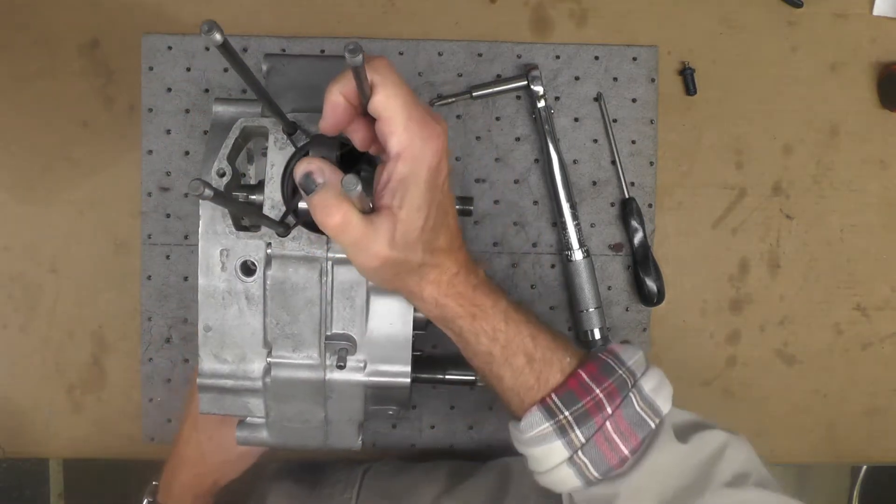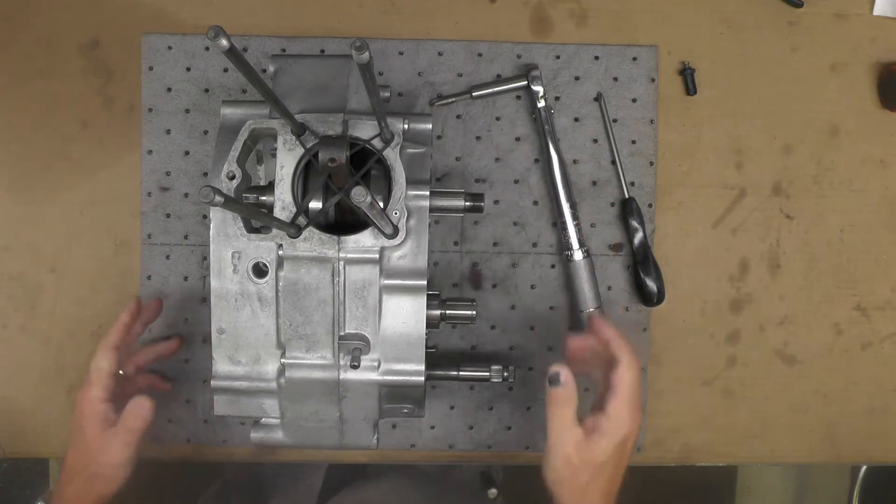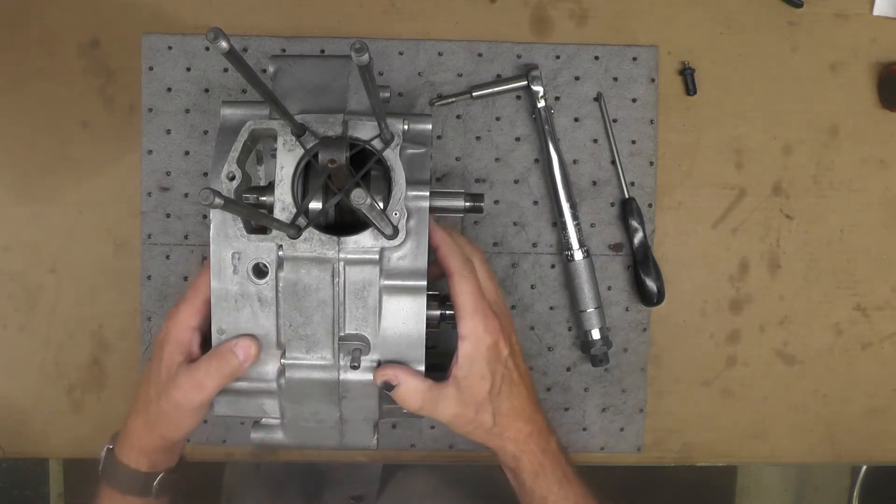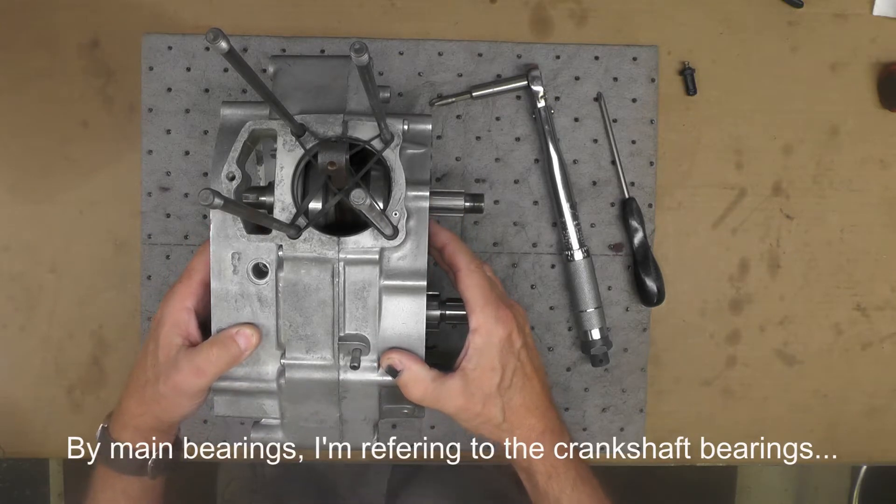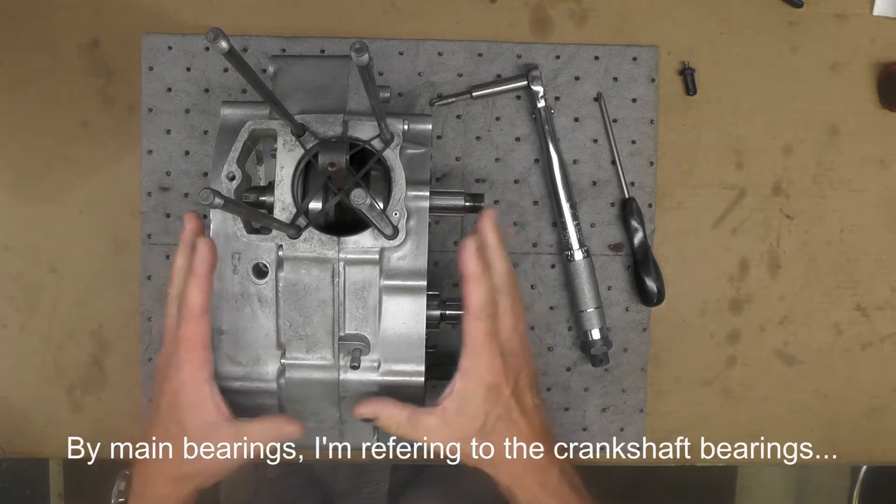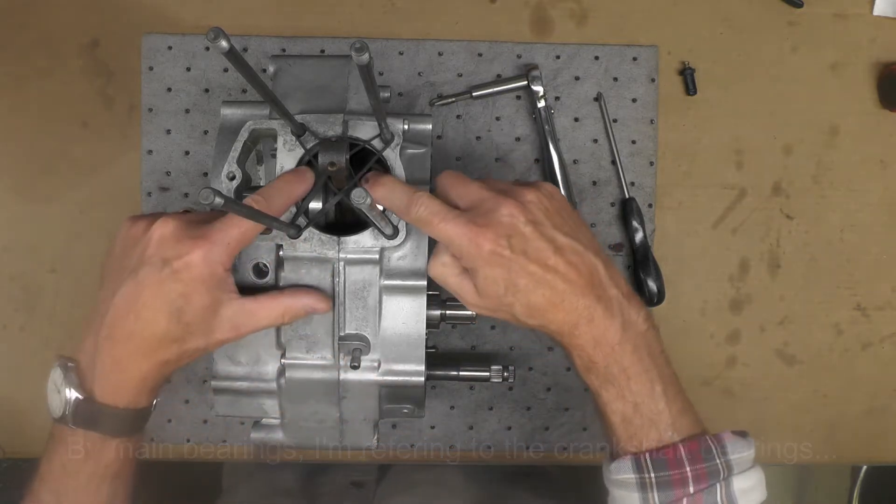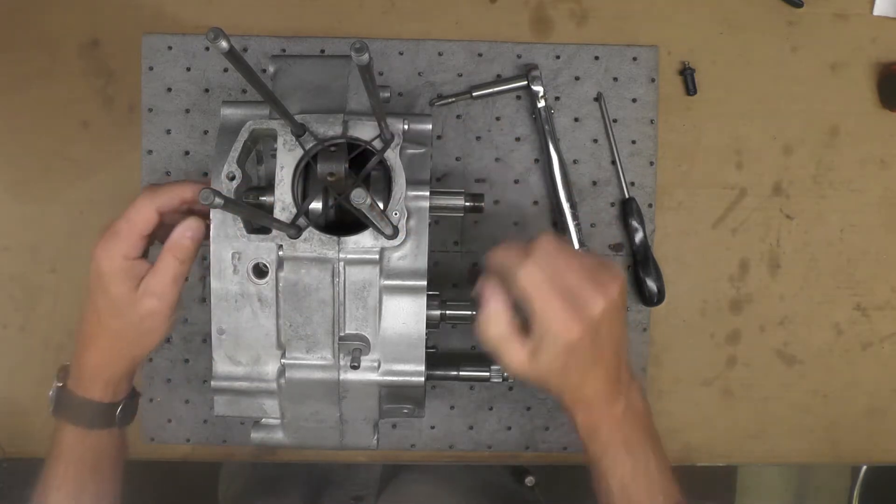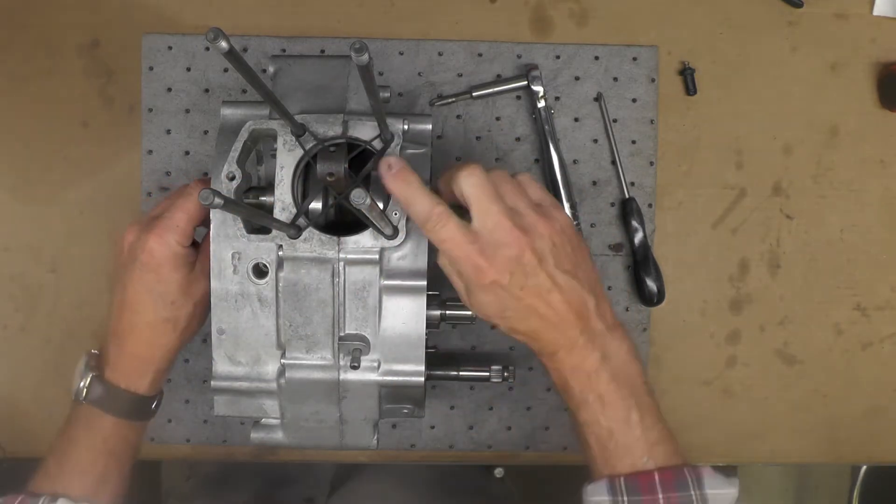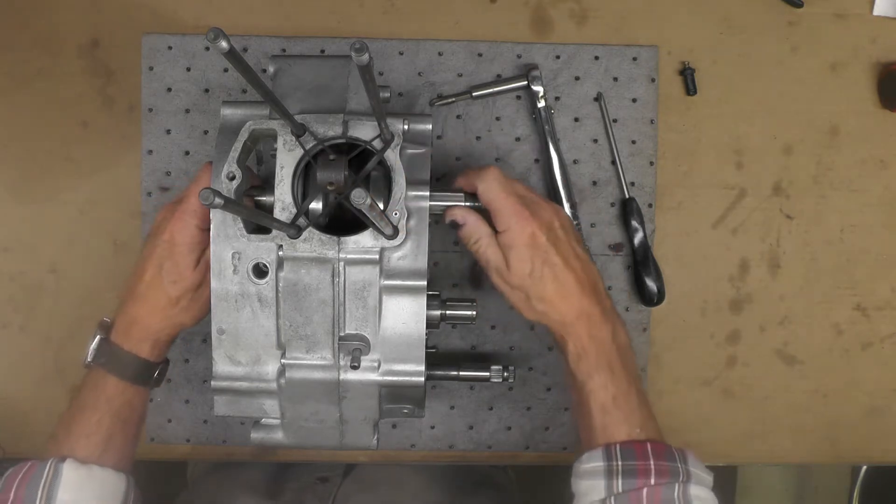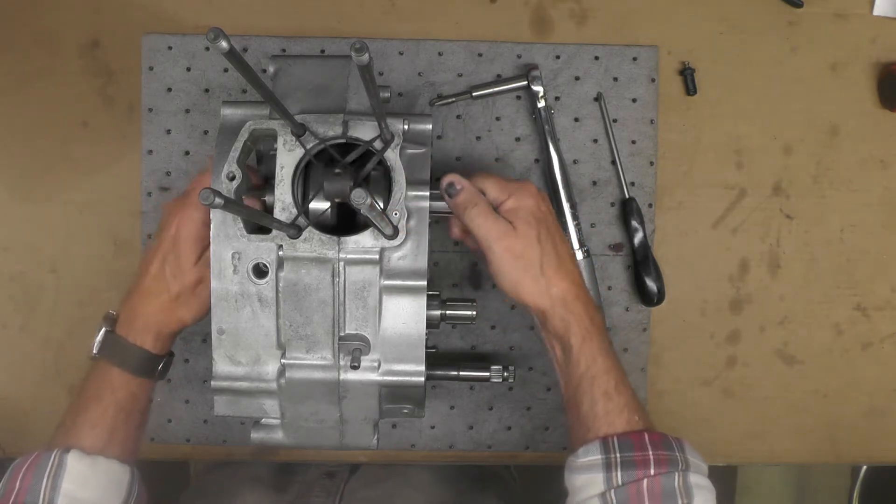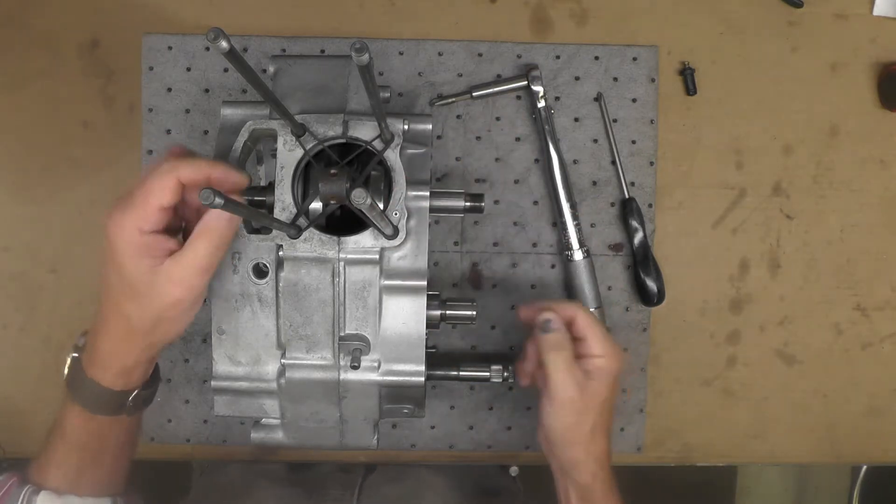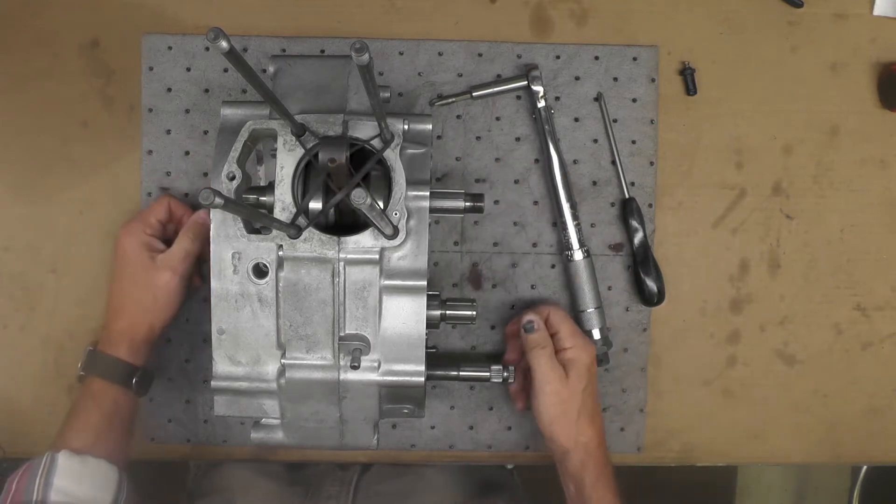It went together easily, I didn't really have any trouble with it. It went together actually easier than most two strokes where the main bearings tend to be a friction or interference fit, and this Honda they're not. You'll notice I have these rubber bands holding the connecting rod, so that allows me to turn the crankshaft without that connecting rod flopping back and forth.